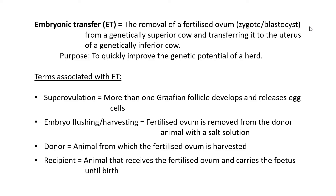The reason we want super ovulation is so this individual can be fertilized and give two embryos instead of one. Both embryos can be removed from this one cow and transferred to two other recipient cows, meaning instead of this animal only having one offspring, she can now have two at the same time — just with different mothers. This typically happens during embryonic transfer.